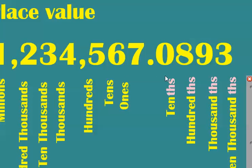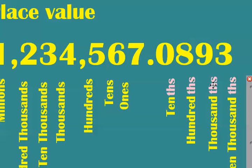Right behind the decimal are the tenths, next to that is the hundredths, and then next door is the thousandths. So: tenths, hundredths, thousandths.